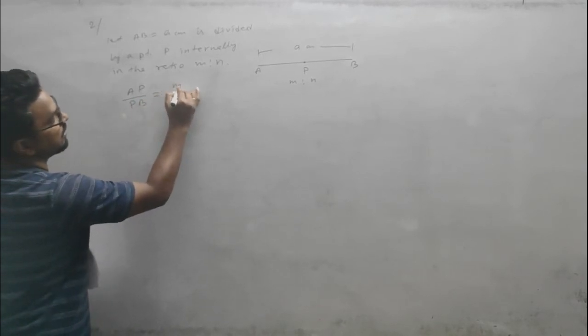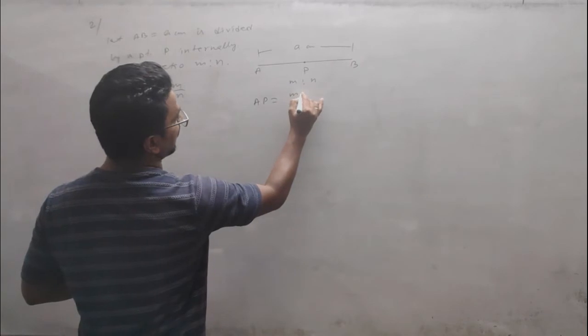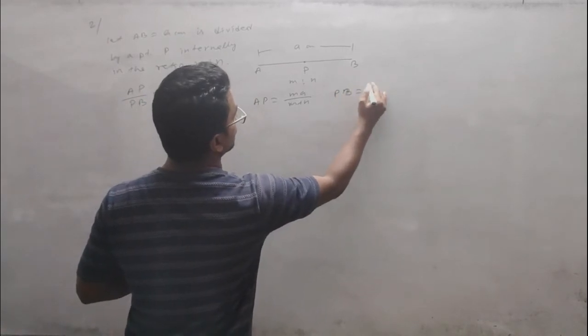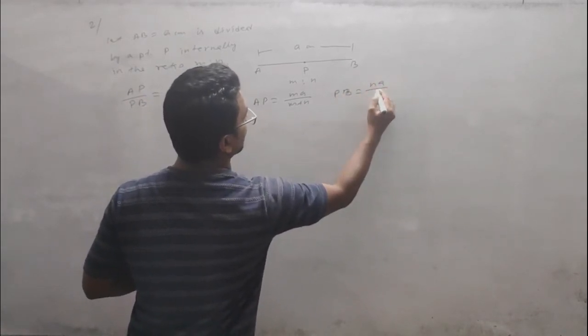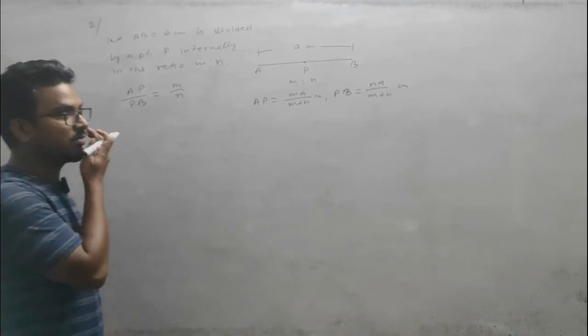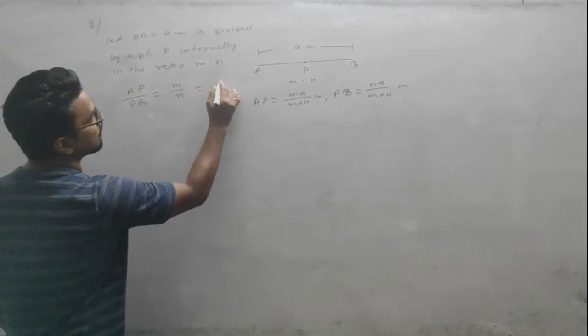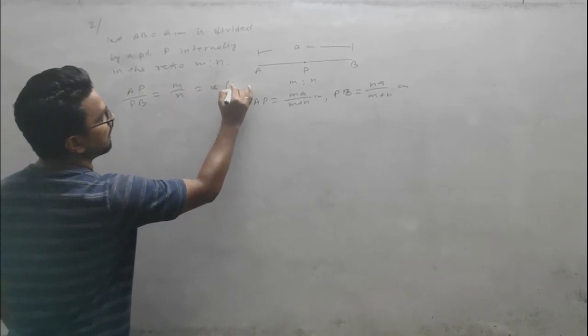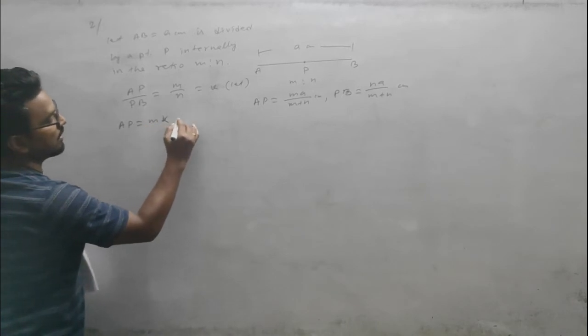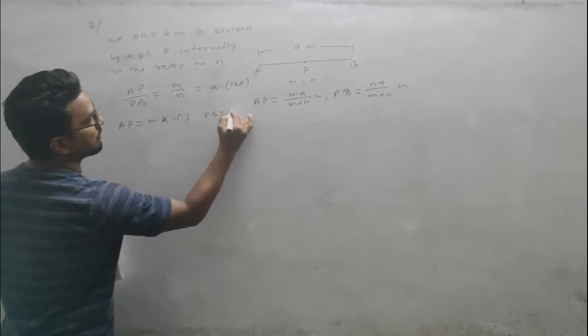We need to prove that AP = ma/(m+n) and PB = na/(m+n). Since AP/PB = m/n, let this ratio equal k. So AP = mk and PB = nk.